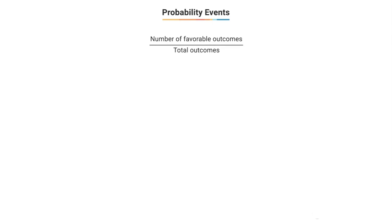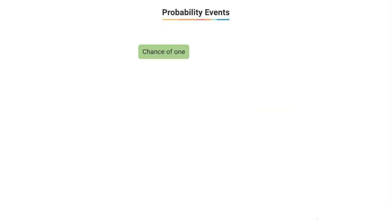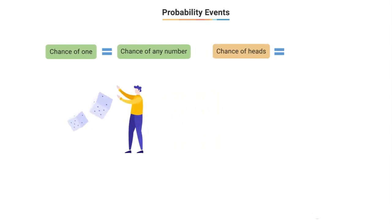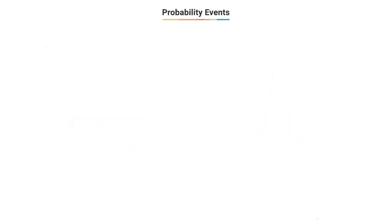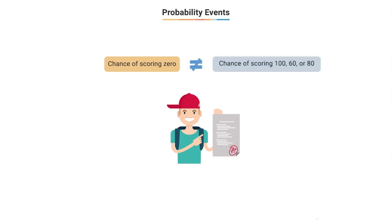The classical formula works for coin tossing and dice rolling because the outcomes do not depend on the past and all outcomes are equally likely. However, this is usually not the case in most real-life experiments. Just as you can have an unfair coin, a test may be designed so that some outcomes are more likely than others — for example, scoring 0 is much less likely than scoring 60 or 80.